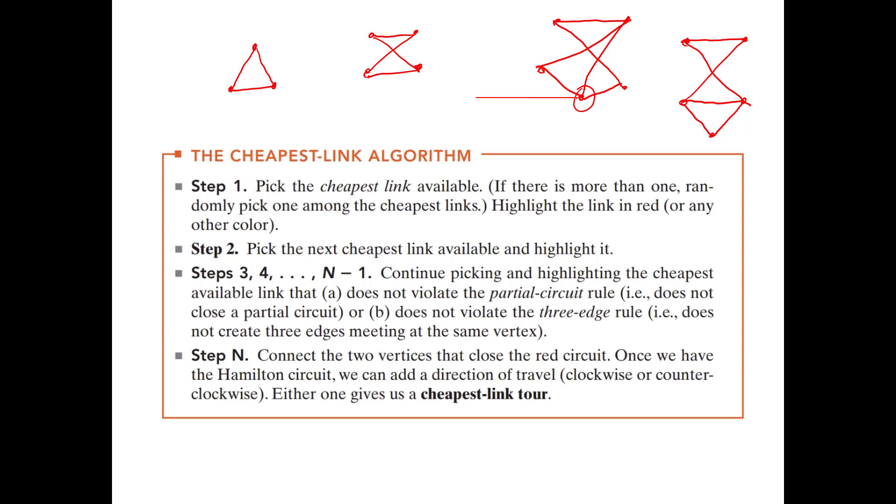So steps three, four, dot, dot, dot, all the way to n minus one. It says continue picking and highlighting the cheapest available link that does not violate the partial circuit rule, i.e. does not close a partial circuit, or b does not violate the three edge rule, i.e. does not create three edges meeting at the same vertex.